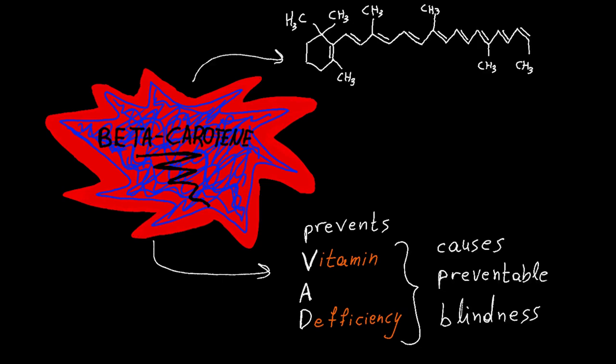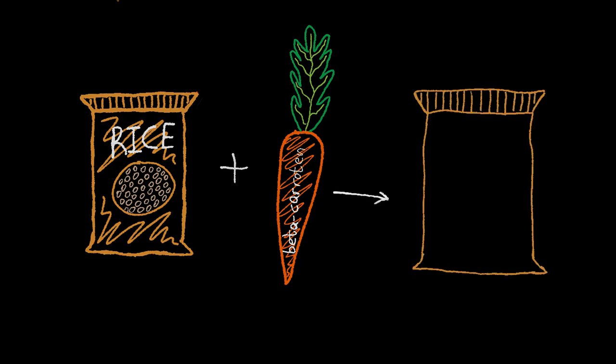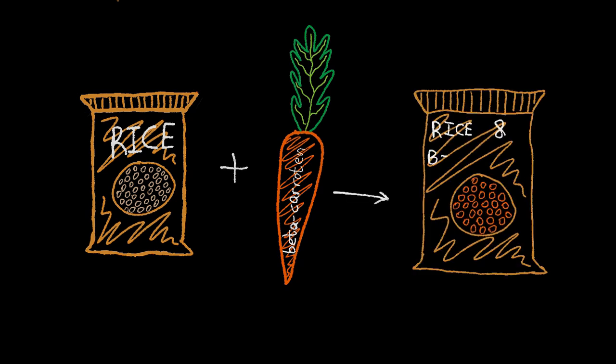VAD is the leading cause of preventable blindness in children and is a public health problem in areas such as Africa and Southeast Asia. So rice would be the perfect source of obtaining the protein, due to its abundance, if it only could produce it.